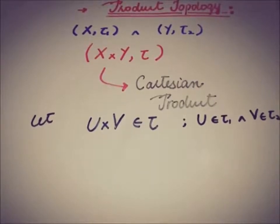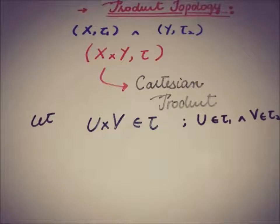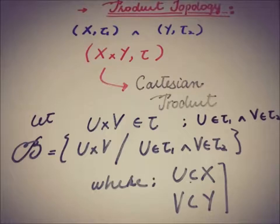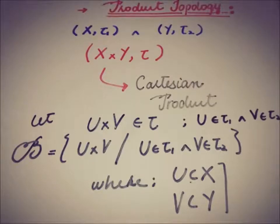Now we are going to define the base of that product topology. The class of all subsets of the type U cross V of X cross Y is a base for that topology tau. The base contains elements U cross V where U belongs to tau1 and V belongs to tau2, with U a subset of X and V a subset of Y. Such elements form the basis of the product topology.